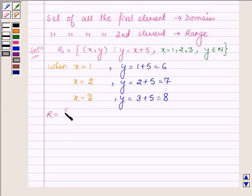So the relation R which is the subset of the Cartesian product of N cross N will have elements 1, 6, 2, 7 and 3, 8.